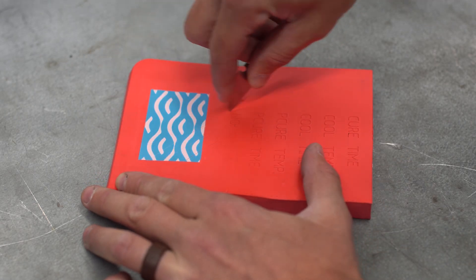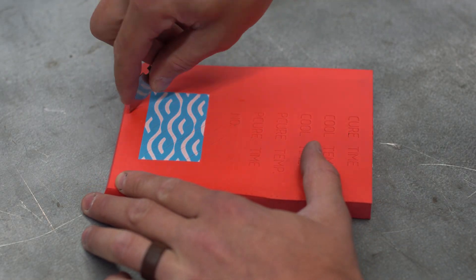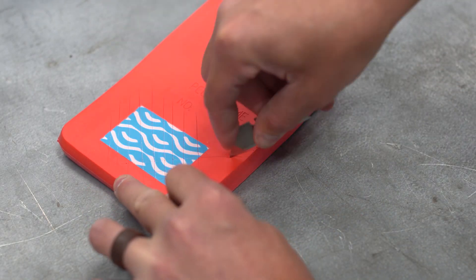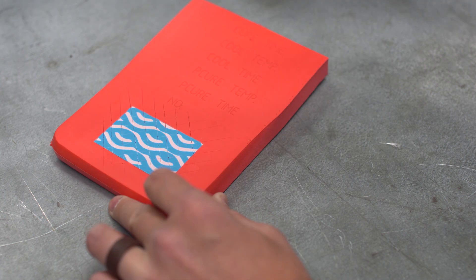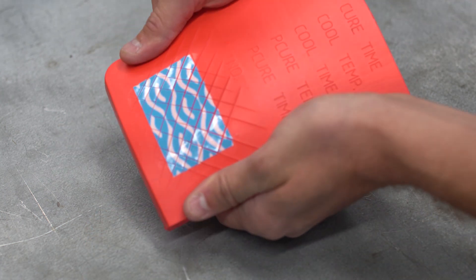Now, to prove how durable our label is, let's put it to the extreme. We are going to cut through the foam with a box cutter to expose and create more edges for the label.